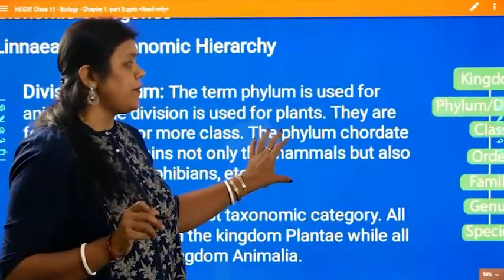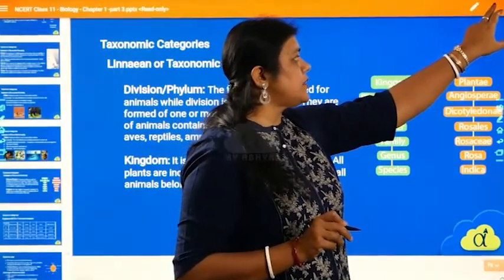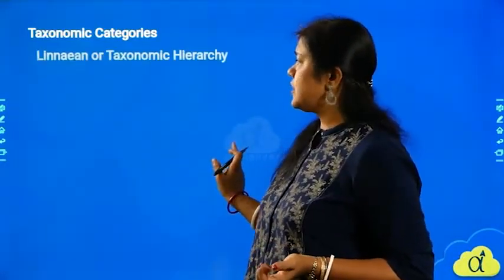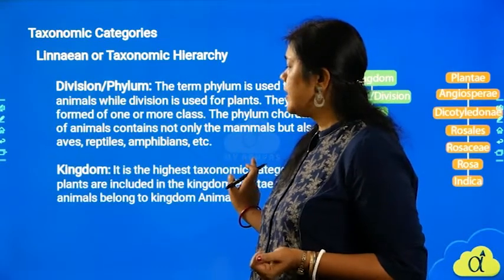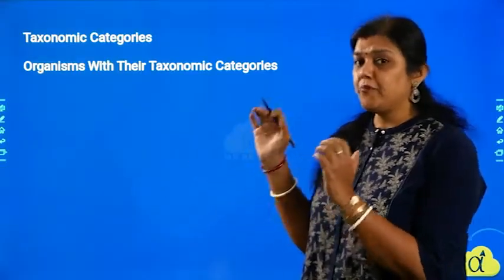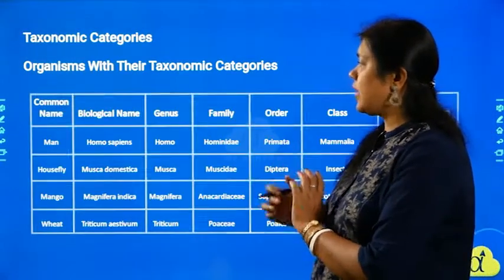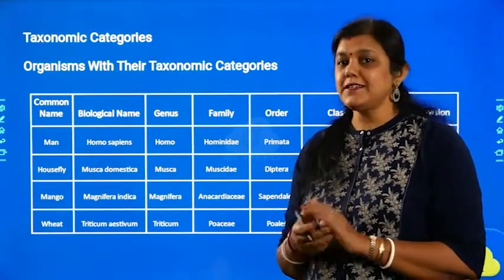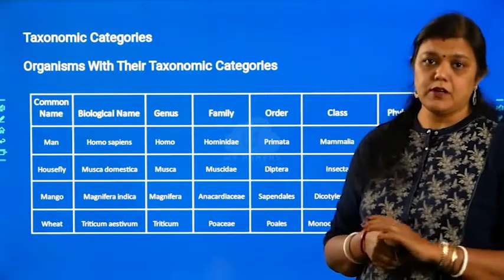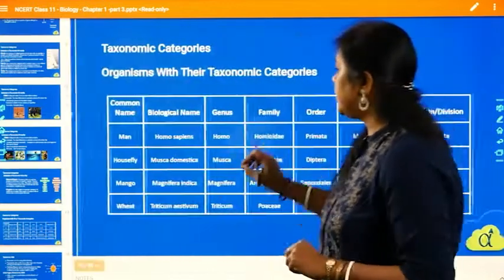Now let us look at how organisms are classified by taking some examples. I have taken a table which is already in your textbook — the same examples — so I can explain it properly.